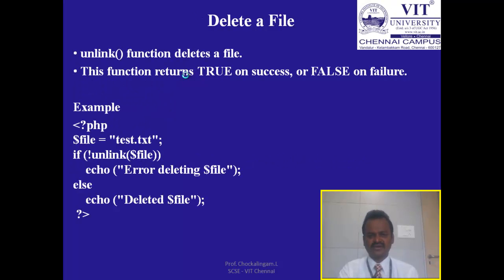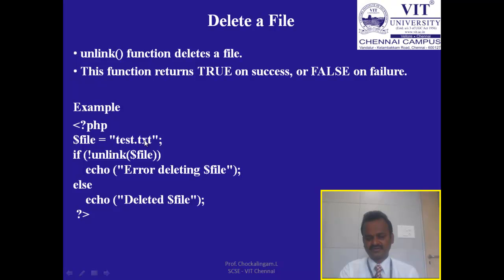To delete a file, use the unlink function. It returns true on success and false on failure. In the PHP code, if unable to delete, it throws the error message 'error deleting file.' If deletion is successful, it displays 'deleted' followed by the name of the file. For example, if you try to remove a file that does not exist, you get the error message. If the file exists, it displays the deletion success message.